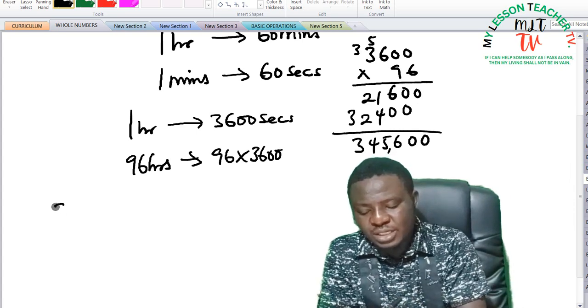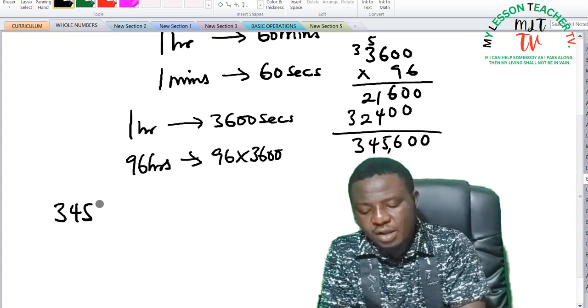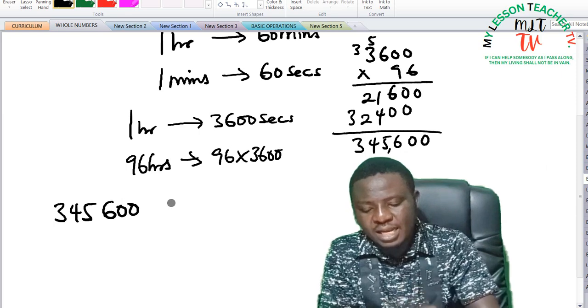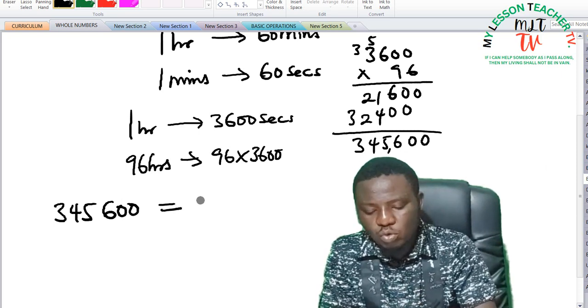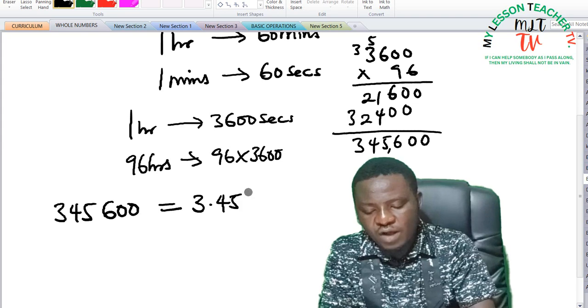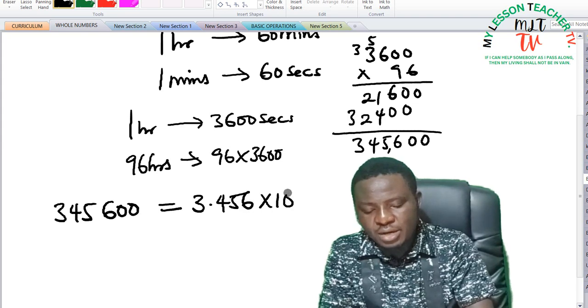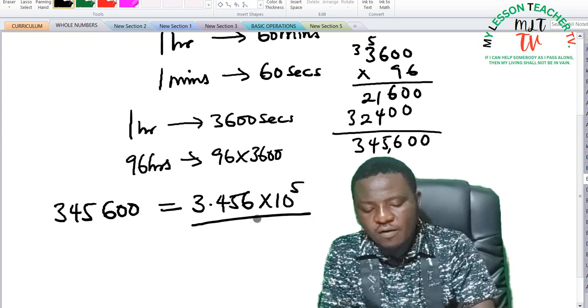So converting and expressing 345,600 in standard form is equal to 3.456 times 10 raised to the power of 5.